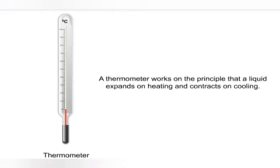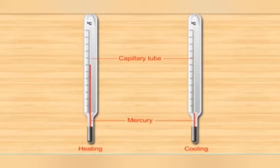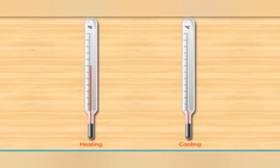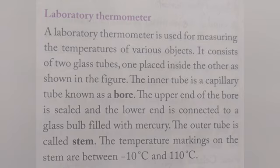Now let us see the working of a thermometer. A thermometer works on the principle that a liquid expands on heating and contracts on cooling. So when we insert the bulb of the thermometer into the body whose temperature is to be measured, the heat energy of the body causes the fluid in the thermometer to expand and move up in the tube, and on cooling the level of mercury in the capillary tube moves down.